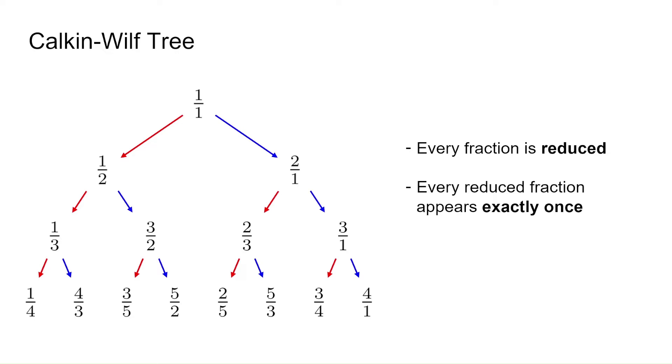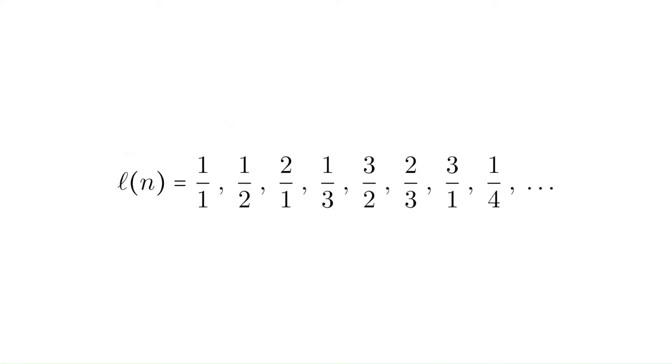It means that if we read off the tree, one level at a time, the list of fractions will be a solution to our question from before. This list is called the Calkin-Wilf sequence, denoted L.